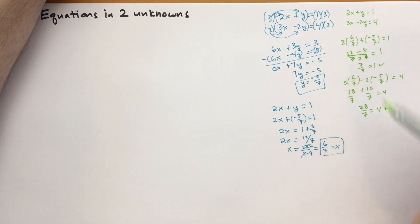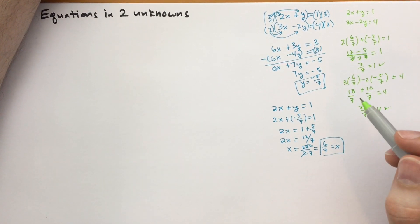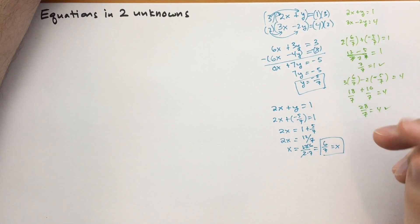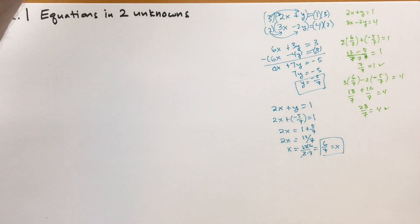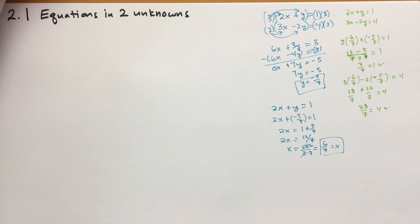So these are the two numbers that work for this equation. In fact, these are the only two numbers that work. x equals 6 sevenths and y equals minus 5 sevenths are the only solutions for these particular equations.